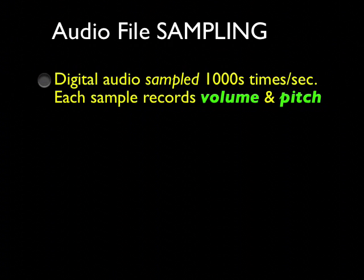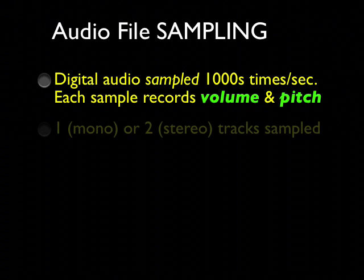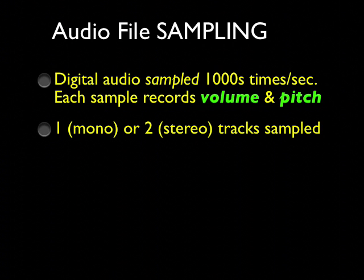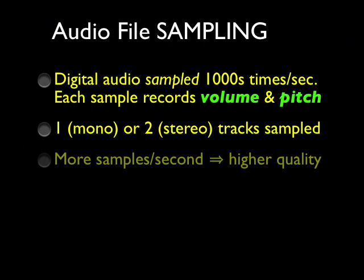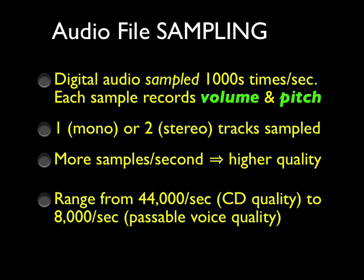One of the variables we'll discuss is audio file sampling. Digital audio is sampled thousands of times per second, with each minute sample recording the volume and pitch at that moment. You can record one or two stereo tracks, but if you record two tracks, that will take twice the bandwidth and twice the storage capacity of one. In general, the more samples per second, the higher the quality of your audio file.